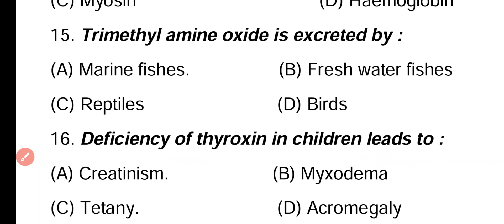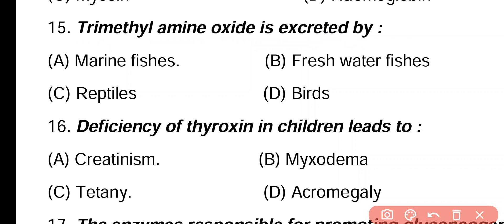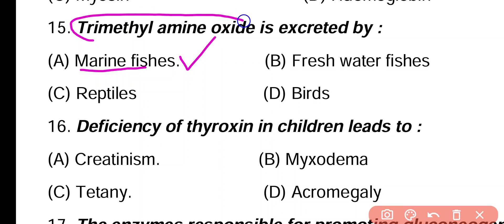Question 15. Trimethylamine oxide is excreted by: marine fishes, freshwater fishes, reptiles, birds. Correct answer is option A. Marine bony fishes excrete trimethylamine oxide (TMAO), which is a major nitrogenous waste product.